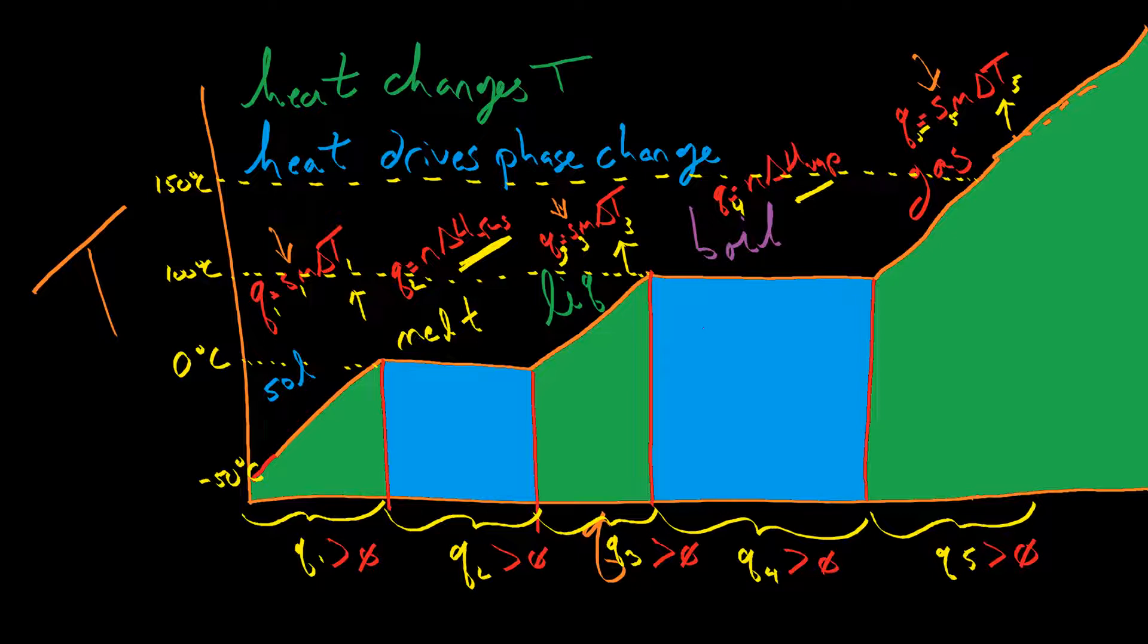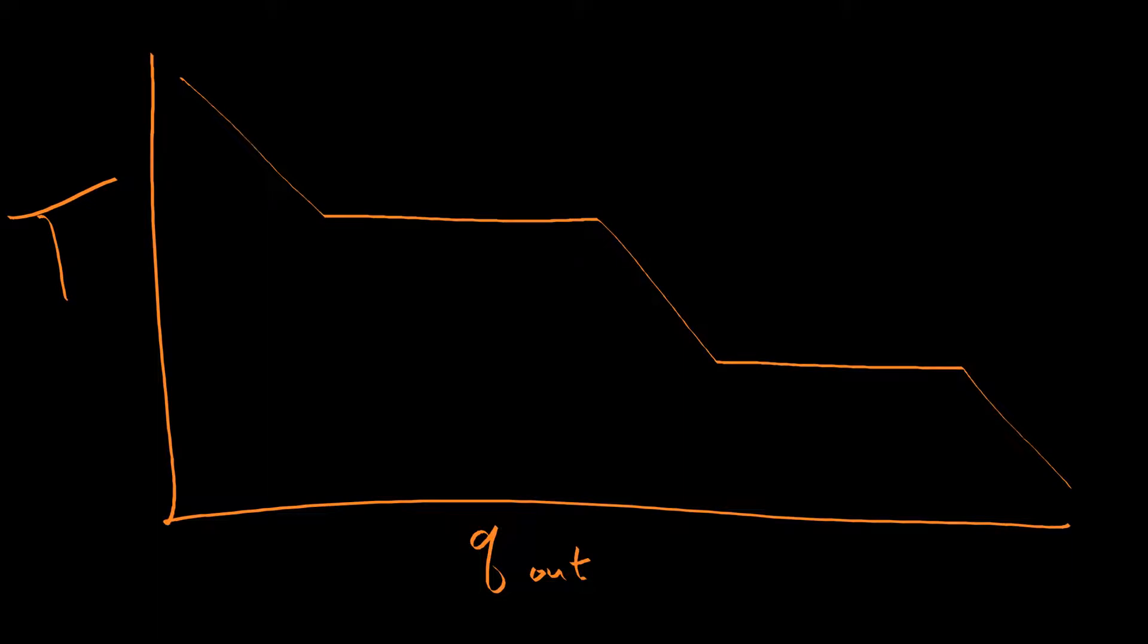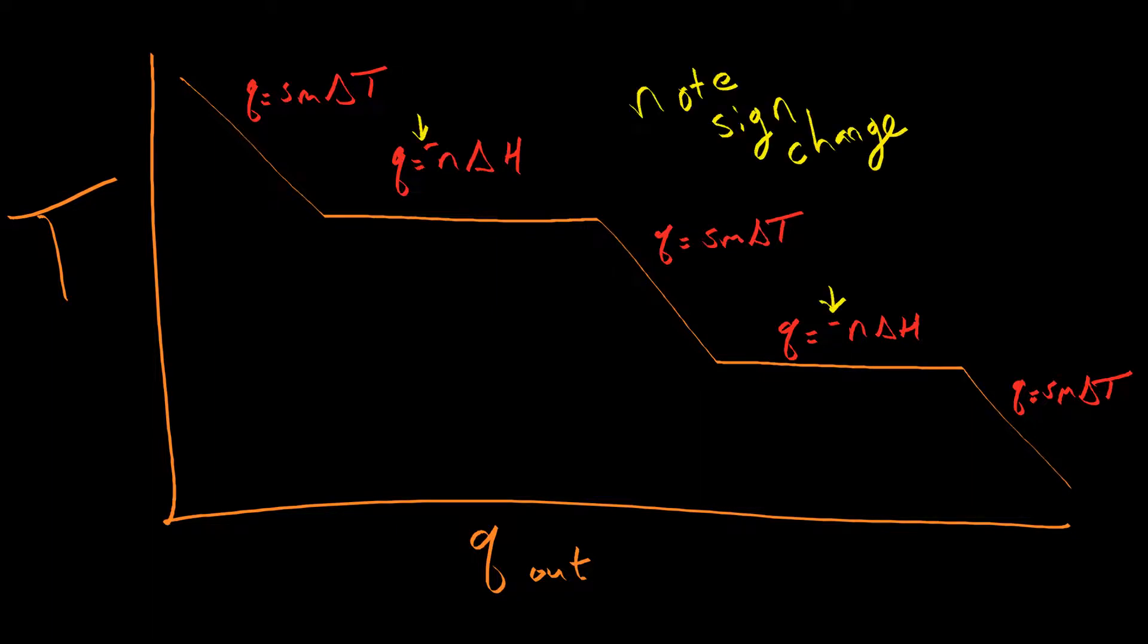Although I could just as easily give you a problem heading in the other direction, and you would get a temperature curve that looks a little bit more like this. It's just the same thing in reverse. The amount of heat being released, rather than the amount of heat going in, and the temperature goes down, down, down, down, down. And it's just the same sorts of math problems. Q equals SM delta T. Q equals negative enthalpy of vaporization. Q equals SM delta T. Q equals negative delta H fusion. Q equals SM delta T.